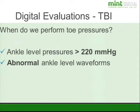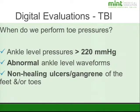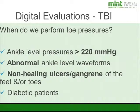Sometimes if the ankle level waveforms are abnormal but we get a normal ABI, that's a clue that the vessels may be calcified, and we want to take some toe pressures to verify that. If the patient has any non-healing ulcers or gangrene on the feet and toes, we want to check toe pressures to assess for possible healing potential. Many physicians will request toe pressures in all diabetic patients because they're more likely to have calcified vessels.